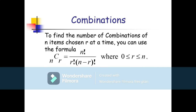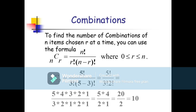To find the number of combinations of n items chosen r at a time, the formula is nCr = n! / (r! × (n−r)!). For example, 5C3: n=5 and r=3. We put in 5! / (3! × (5−3)!) = 5! / (3! × 2!). Expanding: 5×4×3×2×1 divided by (3×2×1) × (2×1). The 3! cancels, leaving 5×4 / 2 = 10.